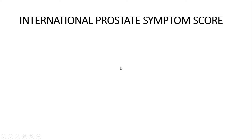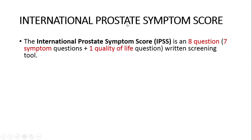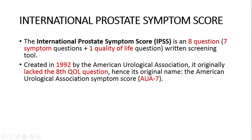What is the International Prostate Symptom Score? The International Prostate Symptom Score, or IPSS, is a screening tool for BPH. It is an 8-question screening tool which includes 7 symptom-related questions and 1 quality of life question. It was created in 1992 by the American Urological Association, and previously this IPSS score was called the AUA score because it originally lacked the 8th quality of life question.